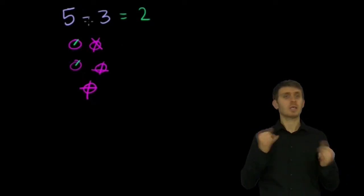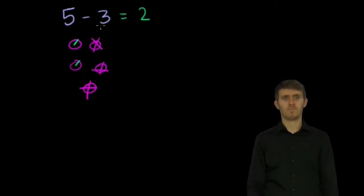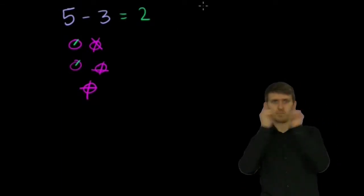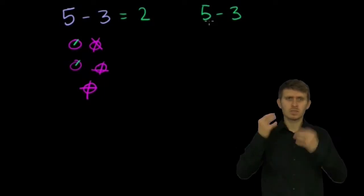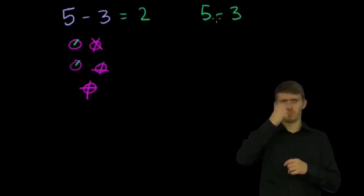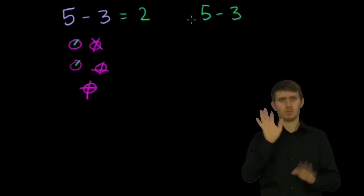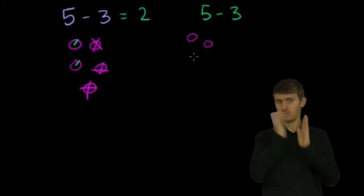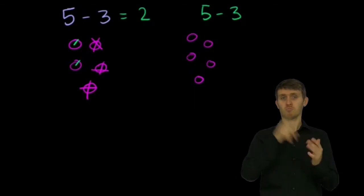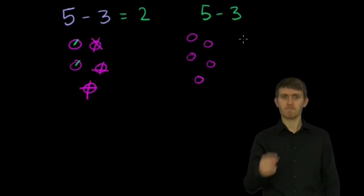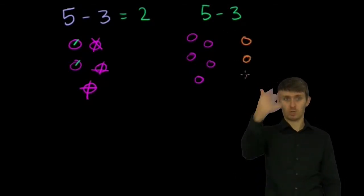Now the other way that I could visualize or think about 5 minus 3, I'll do it over here, 5 minus 3, is to think about what the difference between 5 and 3 is. So let me do this. So let's say I have 5 berries: 1, 2, 3, 4, 5. And let's say that you have 3 berries.